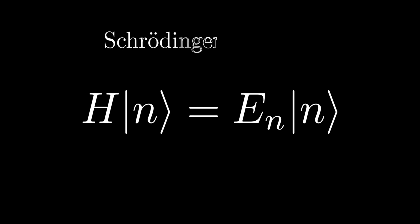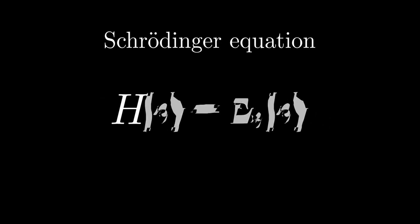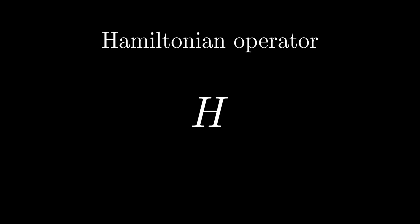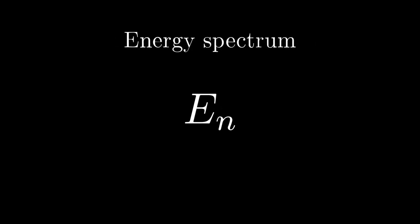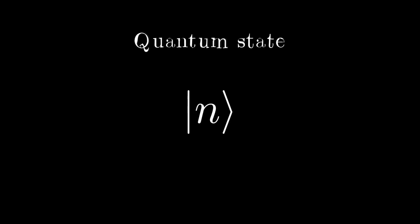The equation takes the form on the screen, indicating that the Hamiltonian operator H acts on the quantum state N to yield the same state multiplied by a constant En, which represents the energy. Although the notation is simple, solving this equation is quite complex, especially for the electronic motion in the molecule.